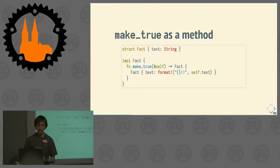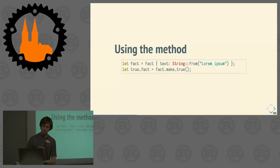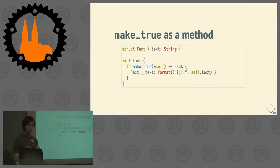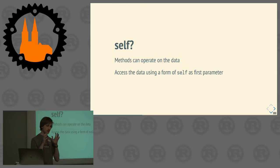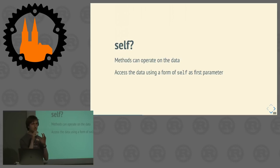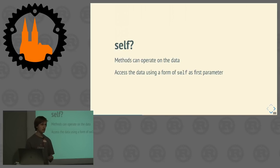We can now use this method: give a Fact, call make_true on it, and get back the true Fact. Now, what is `self`? Self is something we did not have before — before we had some input parameter of the type. This is the most obvious difference between methods and functions: methods operate on the data you are decorating. You can access this data using a form of `self` as the first parameter. Self is very explicitly set in Rust and not implicitly given by a keyword like `this`, as in JavaScript or Java.